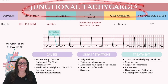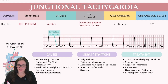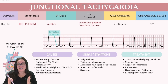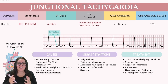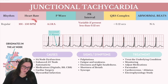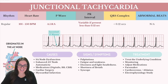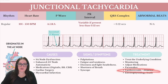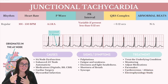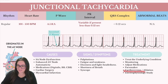Next up, we have junctional tachycardia. They're going to follow the same criteria; however, the heart rate is going to increase between 101 and 150 beats per minute. Remember, anytime we have a heart rate greater than 150 beats per minute with a narrow or normal QRS complex, we're going to be looking at a supraventricular tachycardia. The rhythm remains regular, the P wave still has to meet the AIRS criteria, the PR interval will be variable and less than 0.12 seconds if present, and the QRS complex remains narrow and normal. The causes, signs and symptoms, and treatments remain the same, except you may see a cardioversion or ablation if the heart rate becomes too high.